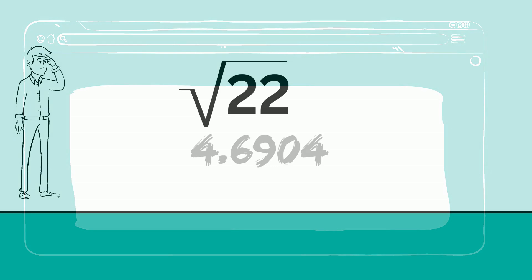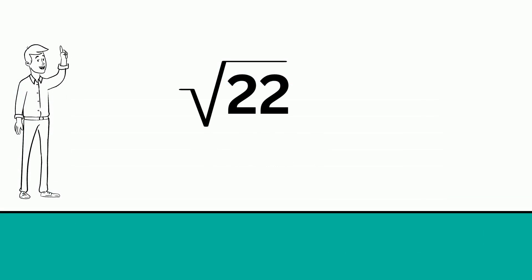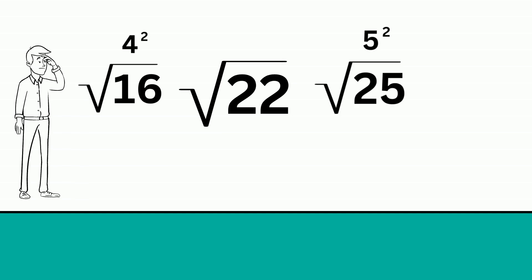You can also estimate the square root of 22. It falls between the square root of 16, which is 4 squared, and the square root of 25, which is 5 squared.